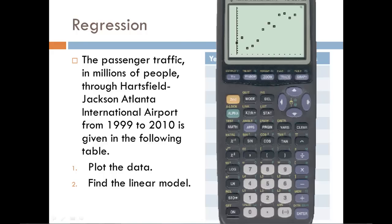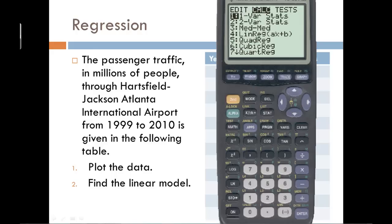Can we find the linear model? So to do that, we need to go back to our stat menu. But this time, instead of edit, we're going to go into the calc section. And there's a bunch in here. Again, we'll maybe see these later, but for now, we just want to pick number four, which is the linear regression. And it actually shows us the format of the equation. It's Y equals AX plus B.